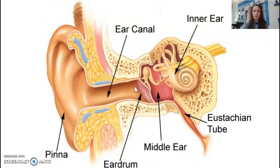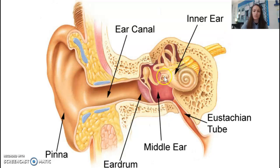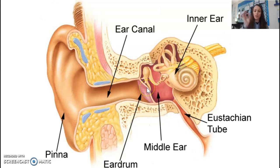As the eardrum moves, it vibrates three tiny connective bones in the middle ear: the hammer, the anvil, and the stirrup. The stirrup is easy to remember because it looks like a stirrup you'd put your foot into on a horse. These three bones — hammer, anvil, stirrup — vibrate together and send those vibrations into the cochlea.